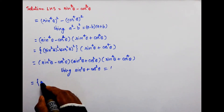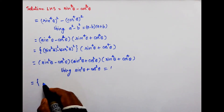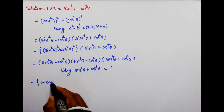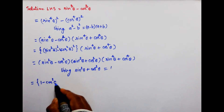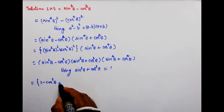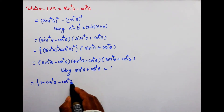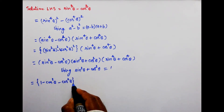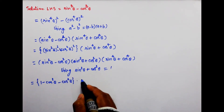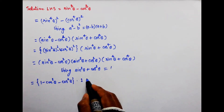Toh sin ko hum cos mein likhenge. Sin square theta = 1 minus cos square theta likh sakte hain. Yahan se: (1 minus cos square theta) minus cos square theta. Aur yeh bracket 1 ho gaya, sin square theta plus cos square theta = 1 se.